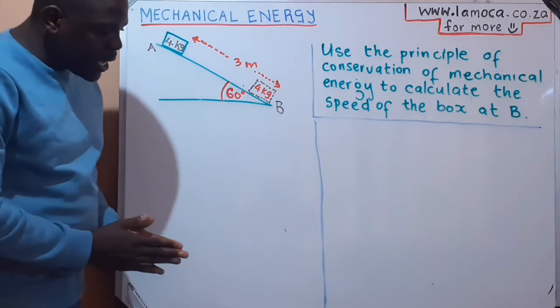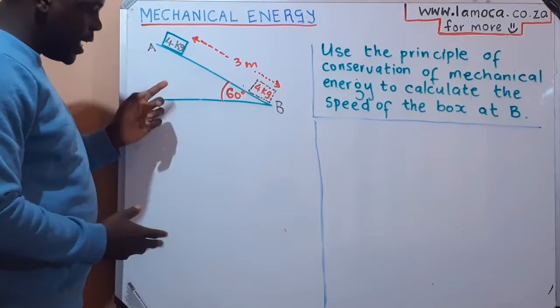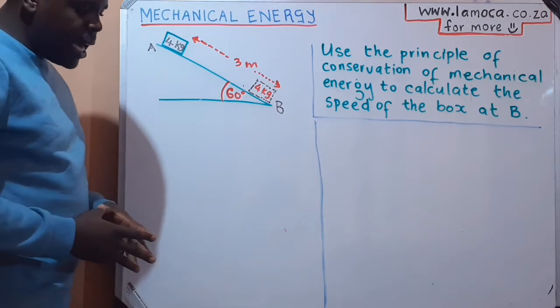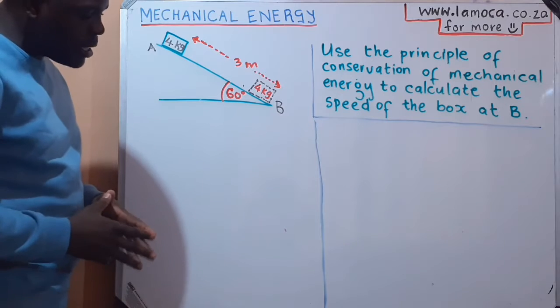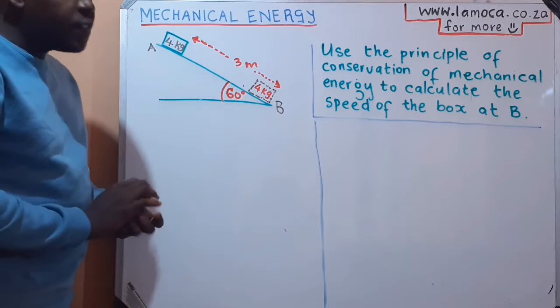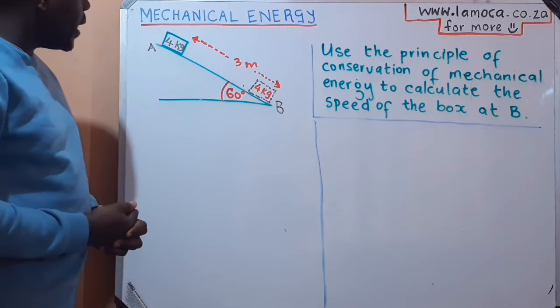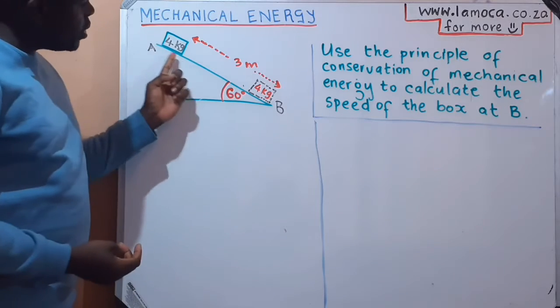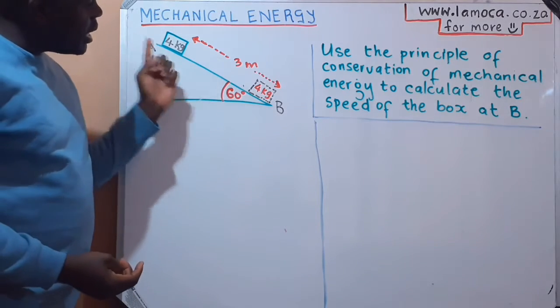We are told that a 4 kilogram box at point A above the horizontal is released and slides down 3 meters from point A to point B on a frictionless inclined plane. So a box is going to be released from point A and slide on the frictionless incline from A to B.